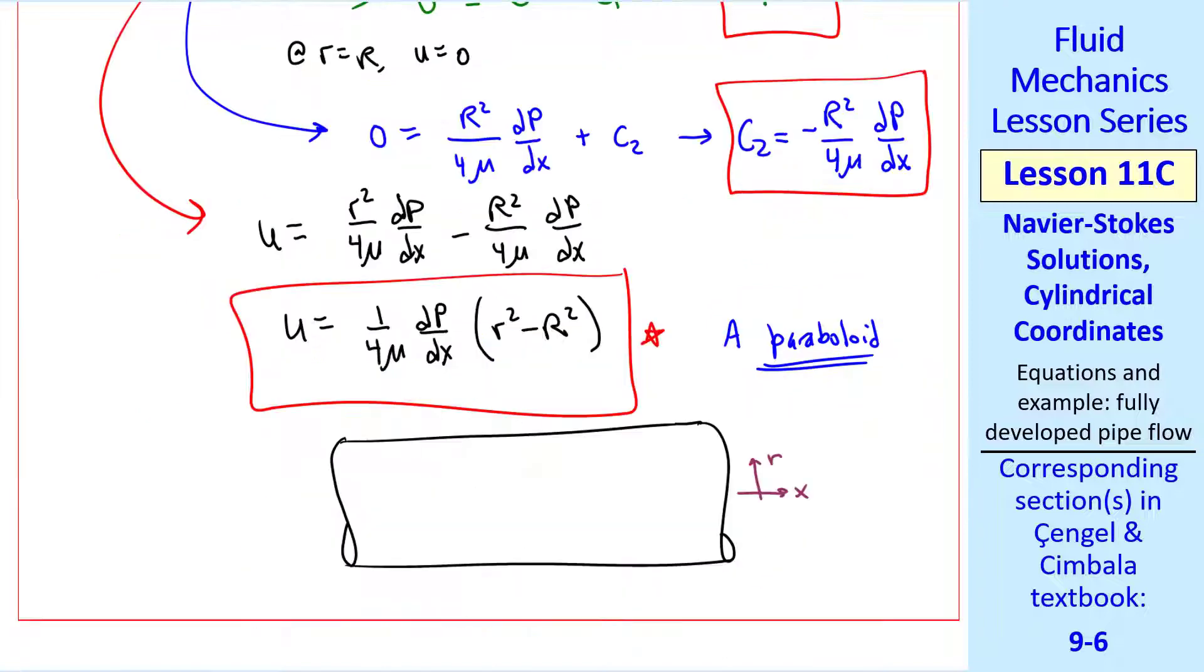This is a paraboloid, which means that the velocity profile is parabolic in the xr plane. And a paraboloid is when you rotate 180 degrees around to get a three-dimensional profile called a paraboloid. So this is our famous velocity profile for fully developed laminar pipe flow. And it's written in terms of this constant dp/dx, the pressure drop, which is negative, by the way, since pressure is decreasing with x. But this is also negative, which gives us a positive u.